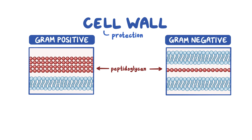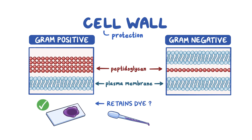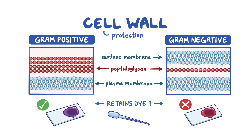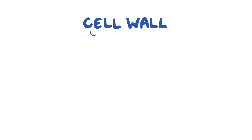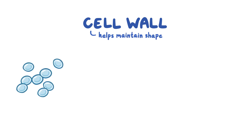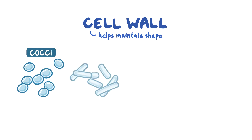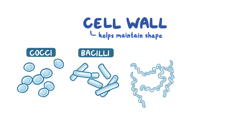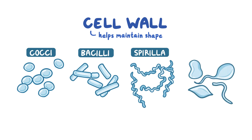Gram-positive bacteria have a single thick layer of peptidoglycan above the plasma membrane, which allows them to retain the staining dye. Gram-negative bacteria have a thinner layer of peptidoglycan sandwiched between the surface membrane and the plasma membrane, so they can't retain the dye. Additionally, the cell wall helps maintain their shape. Round-shaped bacteria are called cocci, rod-shaped ones are called bacilli, spiral-shaped ones are spirilla, and bacteria that can have multiple forms are called pleomorphic.